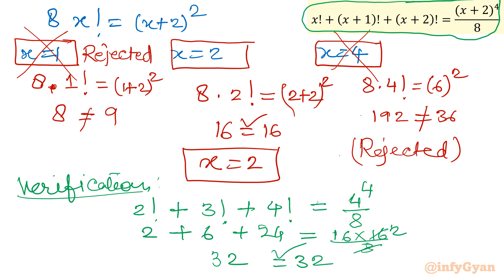So our final solution for the given factorial equation is x equals 2. I hope you liked this video. Thank you so much for watching. Do not forget to like, share, and subscribe. Bye-bye, take care!